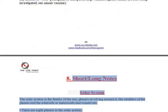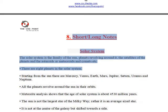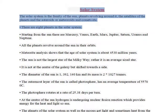The solar system is the family of the Sun, with planets revolving around it, the satellites of the planets, and the asteroids or meteoroids and comets etc.